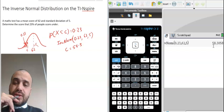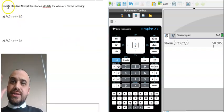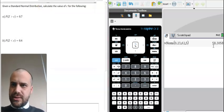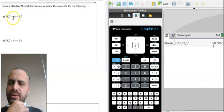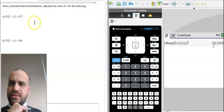Let me show you a couple using the standard normal distribution. Let's look at this one. Given a standard normal distribution, calculate the value of C for the following. The probability that Z is greater than C equals 0.7.